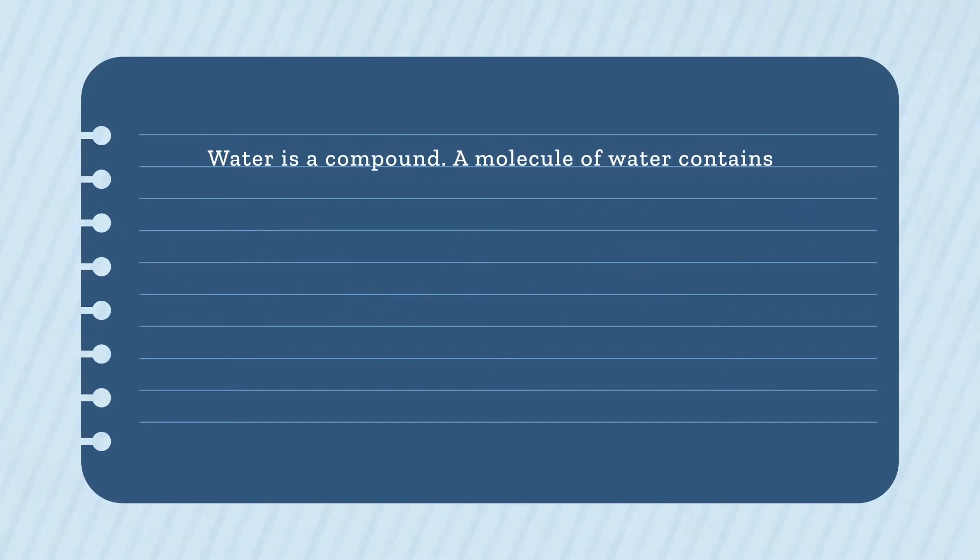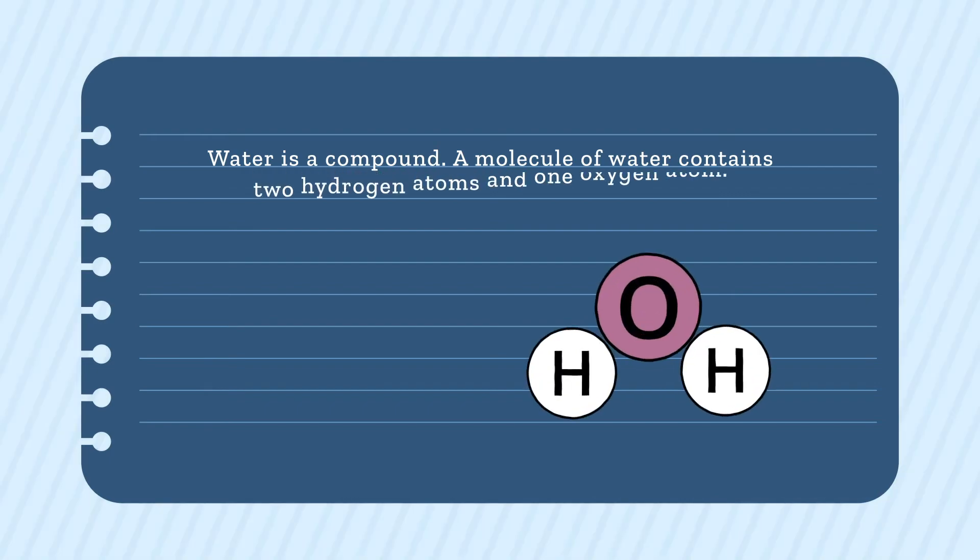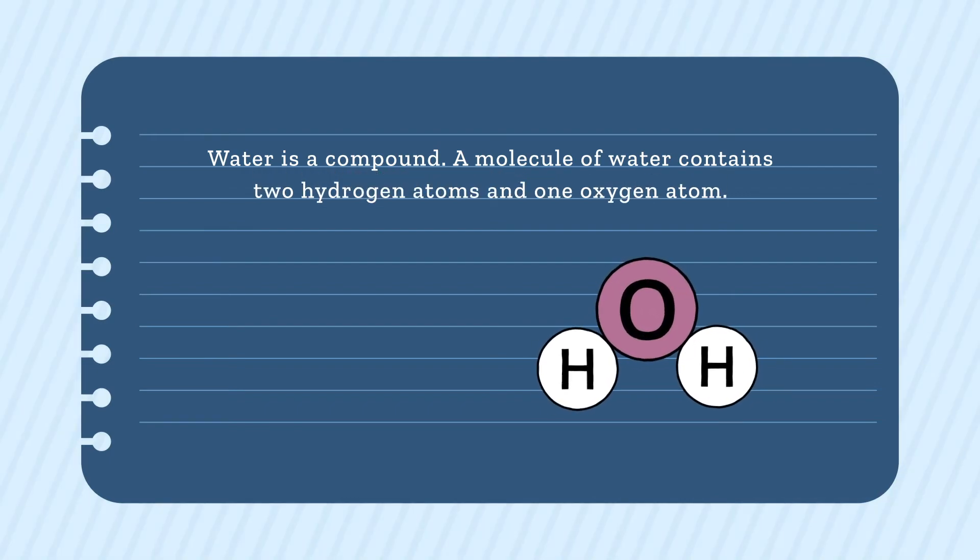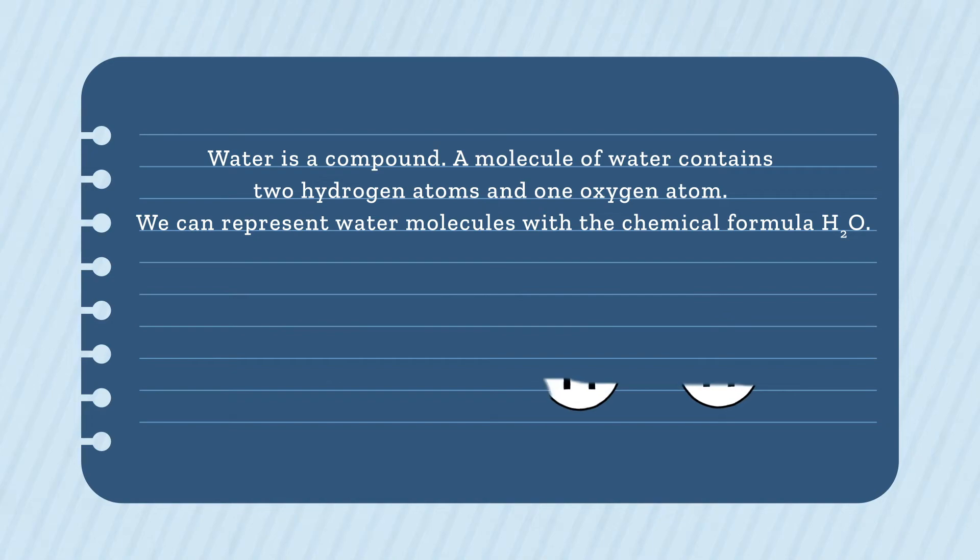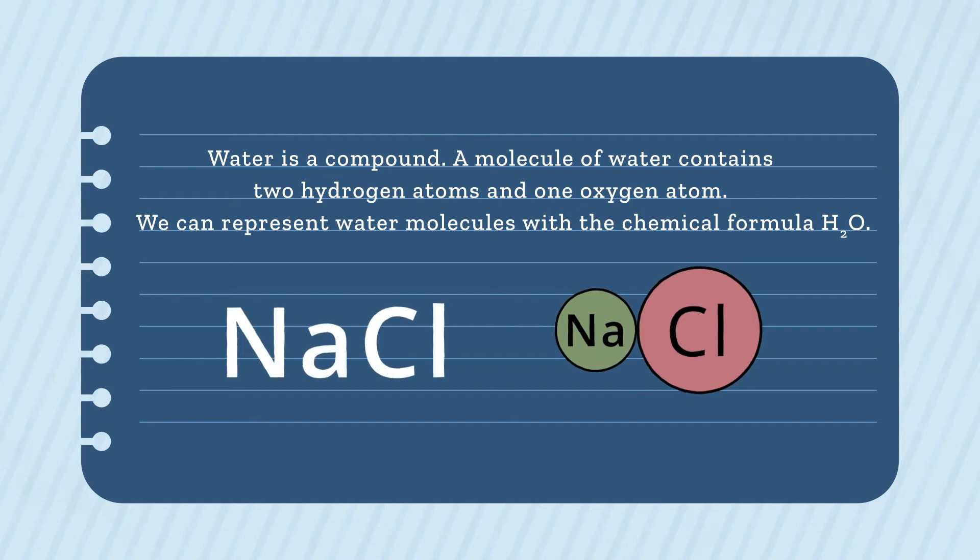Water is a compound. A molecule of water contains two hydrogen atoms and one oxygen atom. We can represent water molecules with the chemical formula H2O. The compound sodium chloride contains sodium atoms and chlorine atoms bonded together in a ratio of one to one. So the formula of sodium chloride is NaCl.